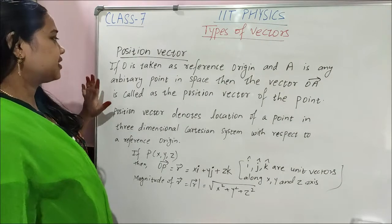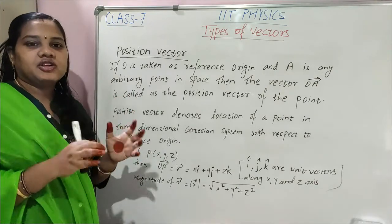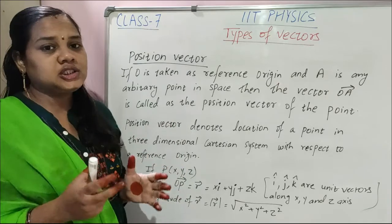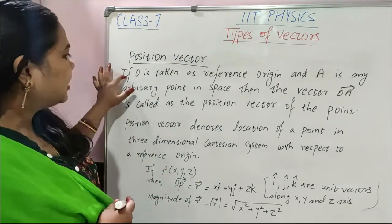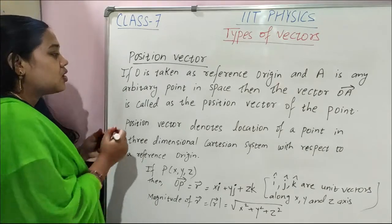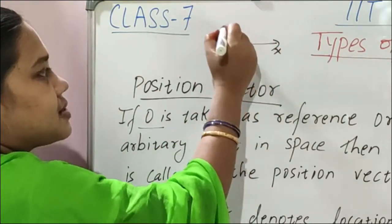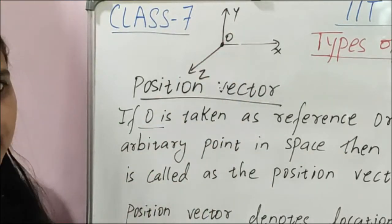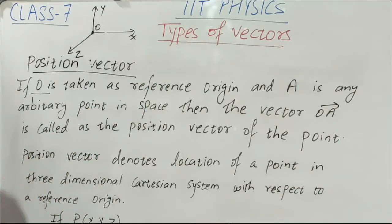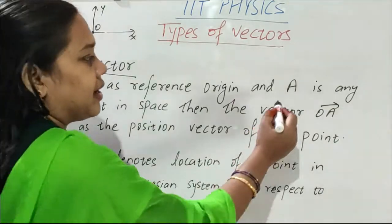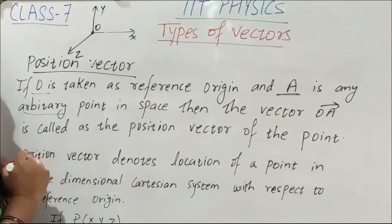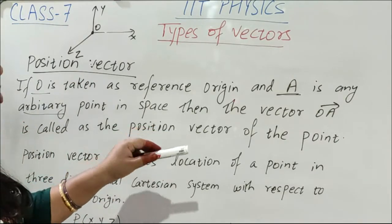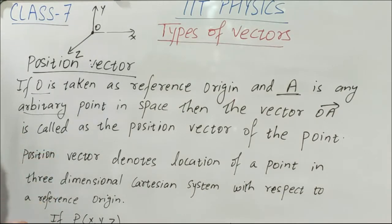Next is position vector. With the name only we can find the particular feature — position vector means a vector which locates the position of a point. If O is taken as the reference origin, and A is any arbitrary point somewhere in space, then vector OA is called the position vector of that point. O is the reference point (origin), A is any point in the space, and OA vector is called the position vector for this point.